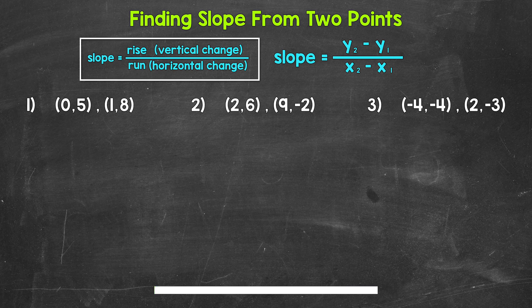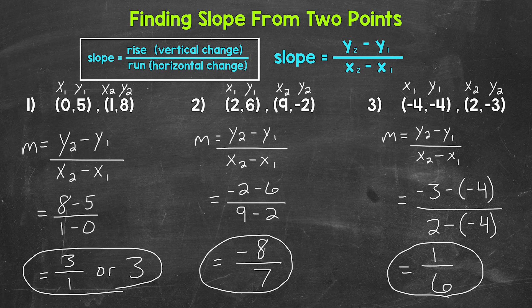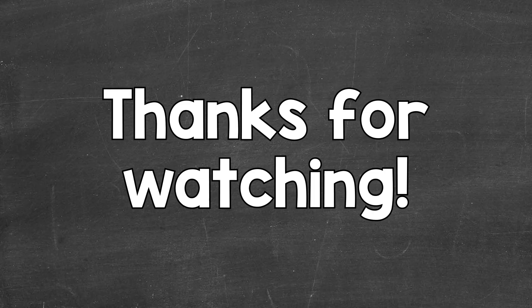Okay, so that was three minutes. Let's go over the answers. For number one, the slope is 3 over 1, which we can also write as 3. For number two, the slope is negative 8 over 7, negative eight sevenths. And then lastly, for number three, the slope is 1 over 6, one sixth. That's how to find slope from two points. I hope that helped — thanks so much for watching, until next time, peace.